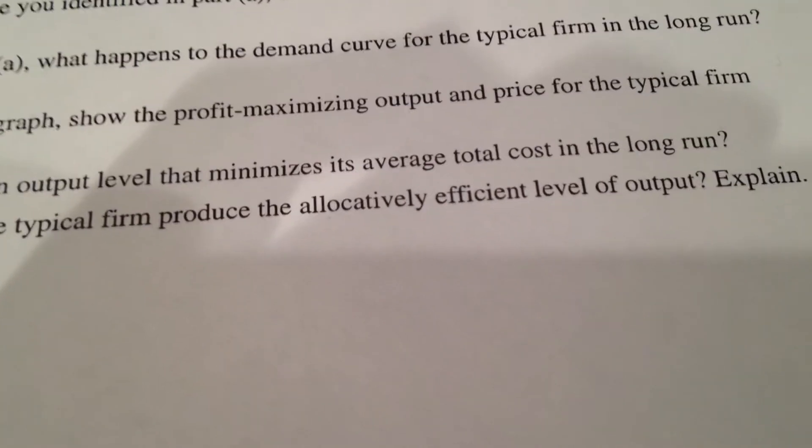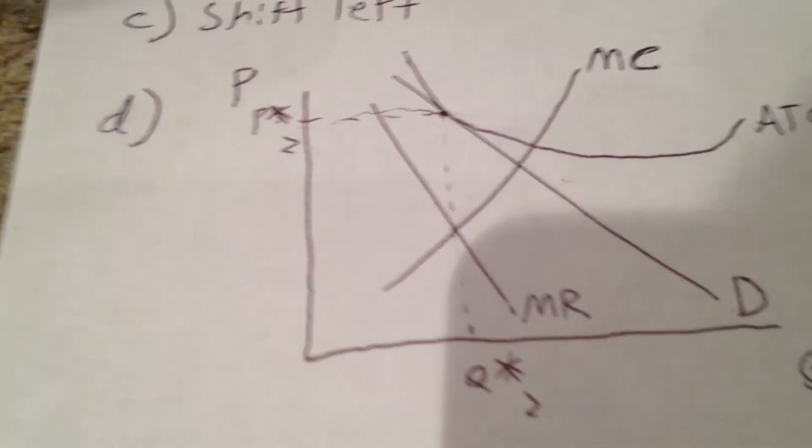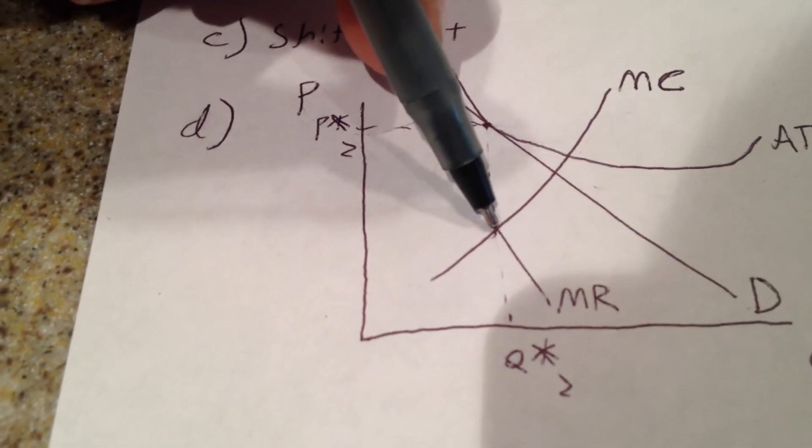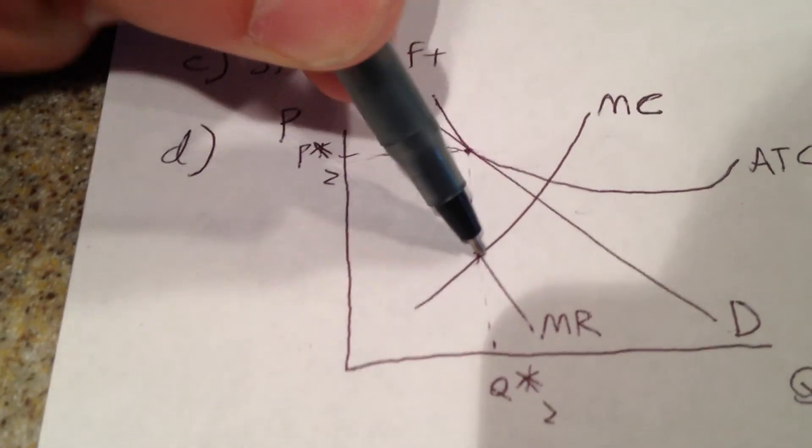Letter F: In long-run equilibrium, does the typical firm produce the allocatively efficient level of output? Explain. The answer to this is also no. Why do we know this? Well, allocative efficiency is when price equals marginal cost. Well, right here we see that our price is right here and our marginal cost is all the way down here. In a perfectly competitive industry this is the case, but in a monopolistically competitive industry, as is in a monopoly, there is no allocative efficiency.